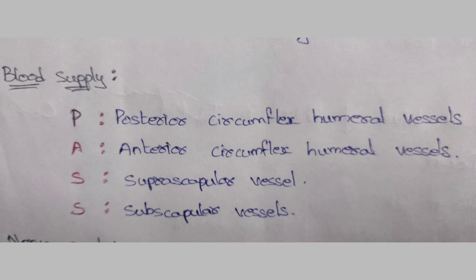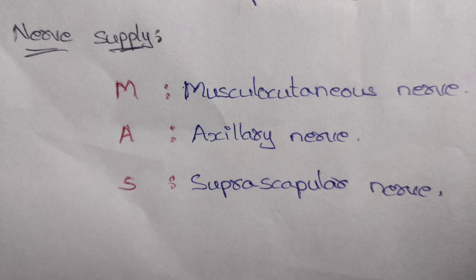The mnemonic of the blood supply of the shoulder joint is 'pass': P for posterior circumflex humeral vessels, A for anterior circumflex humeral vessels, S for suprascapular vessels, and another S for subscapular vessels.